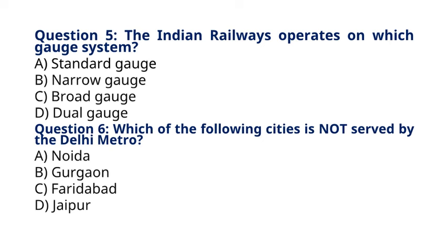Question 6: Which of the following cities is not served by the Delhi Metro? A. Noida, B. Gurgaon, C. Faridabad, D. Jaipur. The correct answer to question 6 is option D, Jaipur. The Delhi Metro primarily serves the National Capital Region (NCR), including Noida, Gurgaon, and Faridabad.